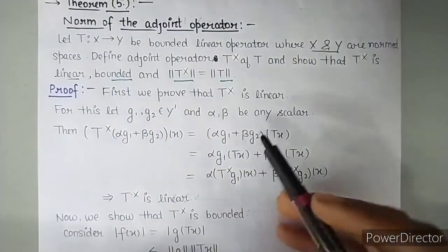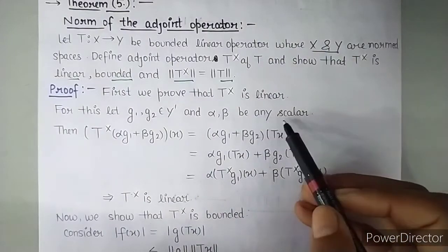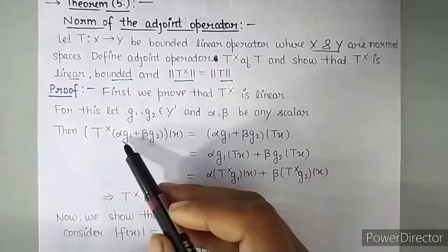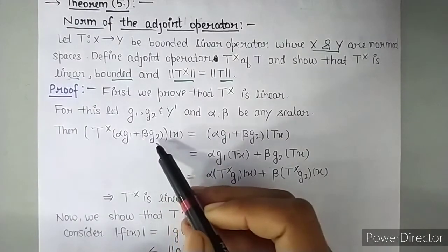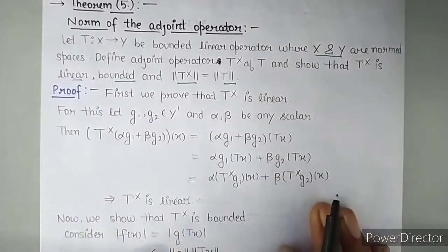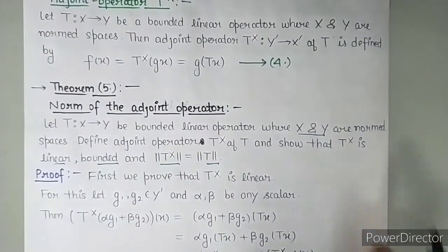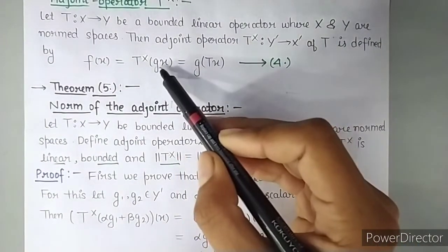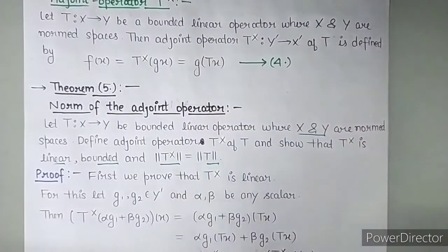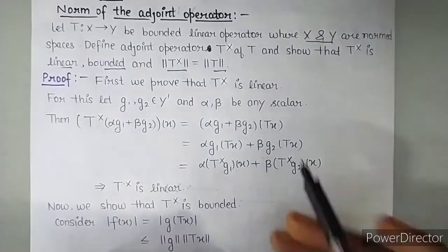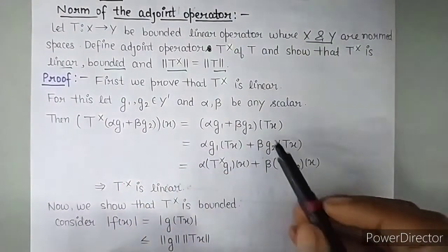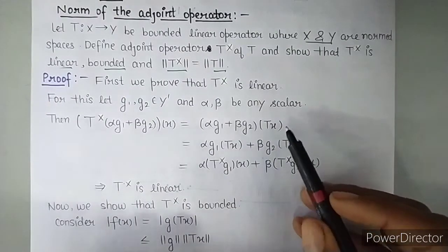So we have to take T star of alpha G1 plus beta G2 of X. So by the definition from equation number 4, T star of G of X becomes G comes outside and when this shifts inside TX it becomes T again. So look, this term will shift outside and this TX going inside becomes T. OK? Then we applied TX separately on both terms.